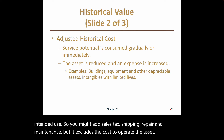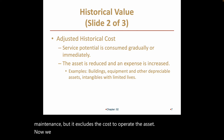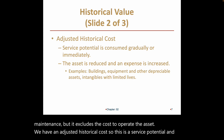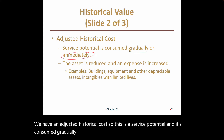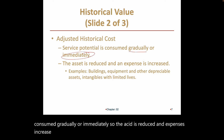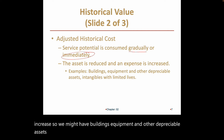Adjusted historical cost reflects service potential that is consumed gradually or immediately: the asset is reduced and an expense is increased. This applies to buildings, equipment, and other depreciable assets, as well as intangibles that have limited lives, where we record that usage.